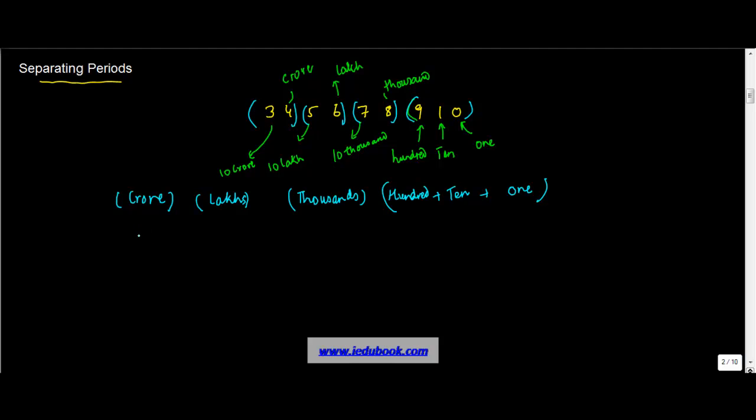When you write 3, 4, 5, 6, 7, 8, 9, 1, 0, you put commas after each period. So if you have to write this number, hundreds, tens, and ones form one period, so you add a comma here.